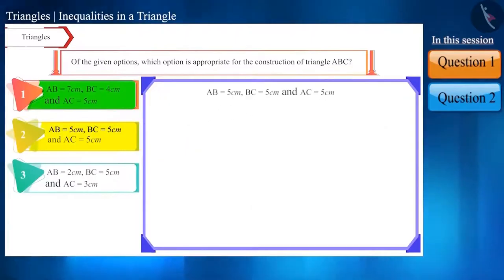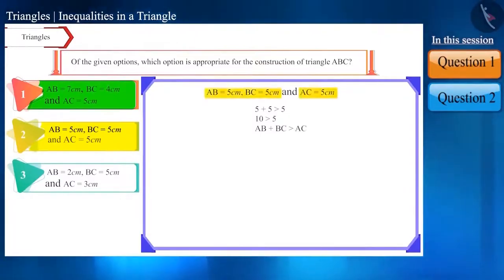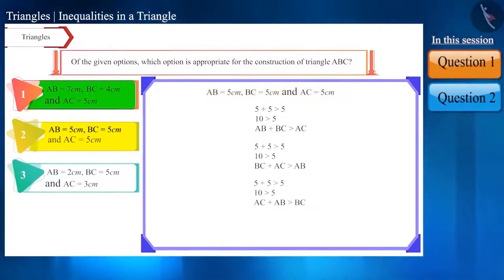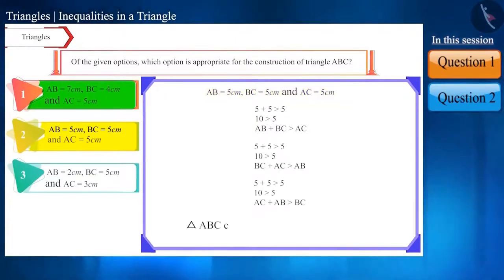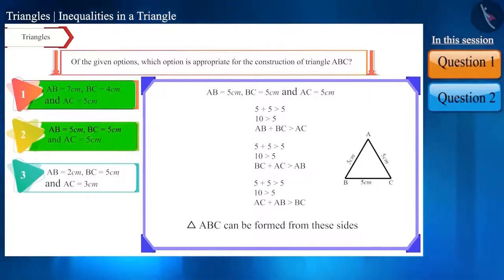Similarly, in the second option, the sum of side AB and side BC is greater than side AC. Since the lengths of all three sides are equal, we will get all three inequalities in the same way. Thus, triangle ABC can be formed from these sides, so this option is also correct.